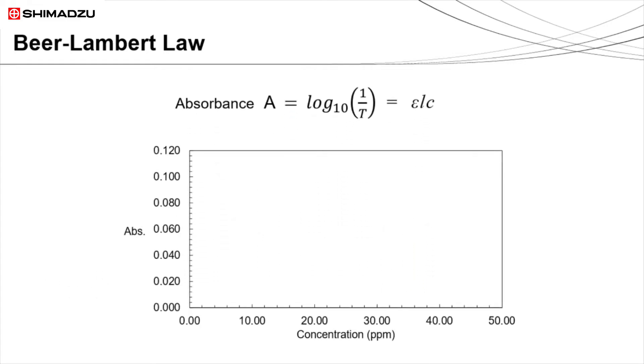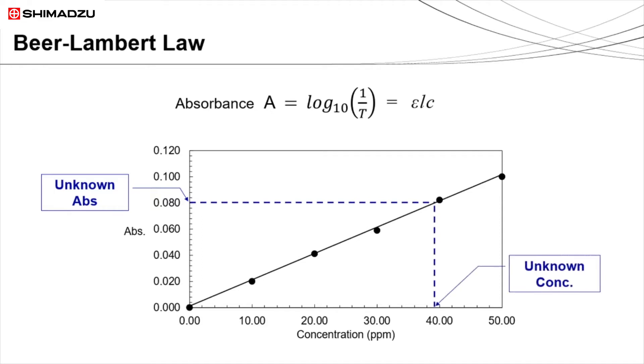If the absorbance of a series of solutions of known concentration are measured, a linear calibration graph of absorbance versus concentration could be obtained if the Beer-Lambert law is obeyed. The Beer-Lambert law states that the absorbance of an analyte in solution is proportional to its concentration for a fixed path length. The concentration of an unknown sample solution can be determined by measuring its absorbance and quantified using its calibration curve.